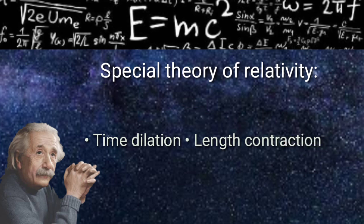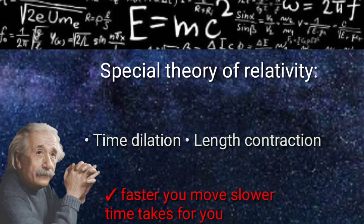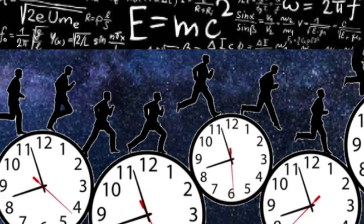So Einstein's equation simply shows us that the faster you move with respect to someone, the slower the time flows for you. And we can really understand it by using Twin Paradox.